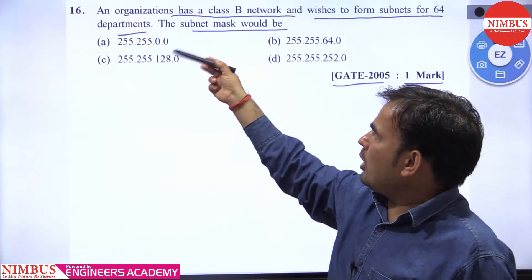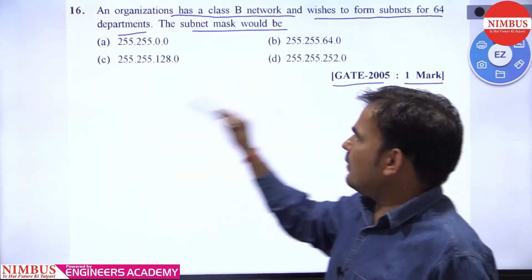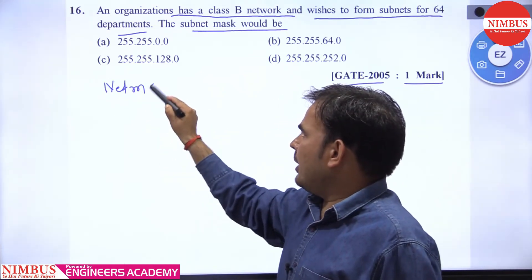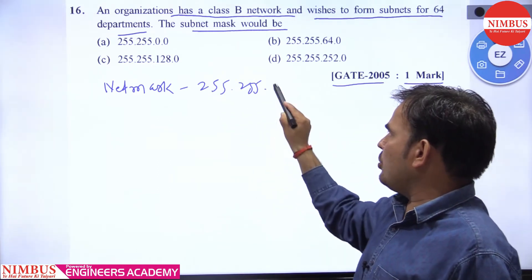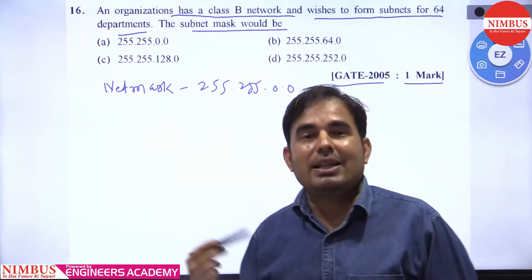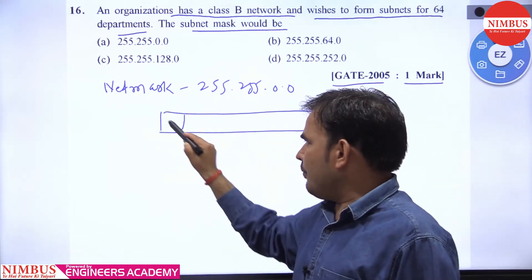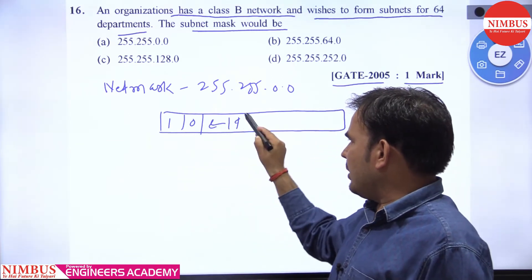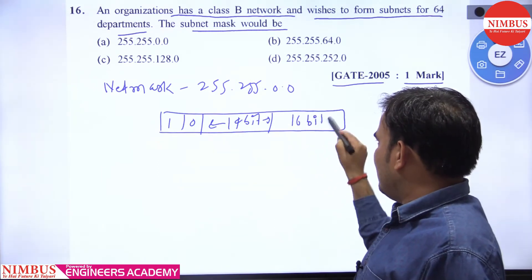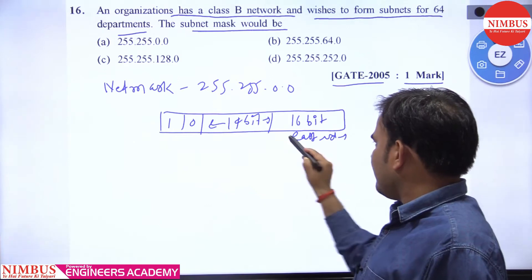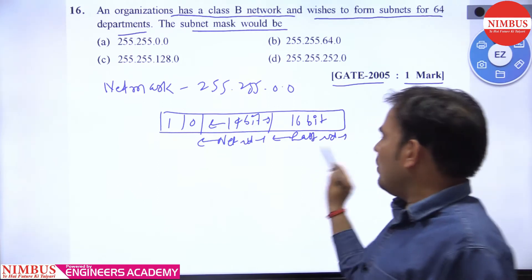As given in the question, the organization has a class B network. The net mask for a class B network is 255.255.0.0. Because in a class B network, the first two bits are reserved, the remaining 14 bits are for the net ID, and 16 bits are for the host ID.